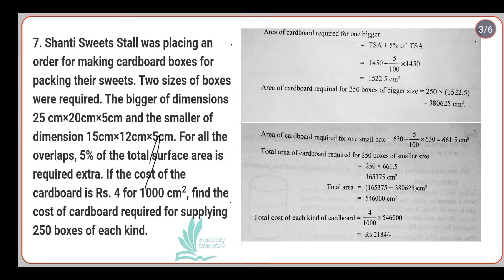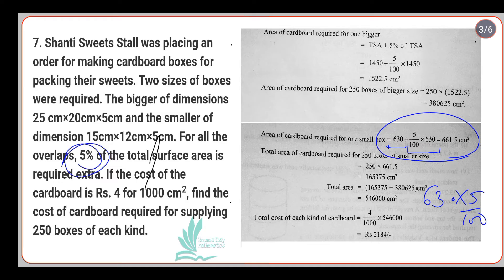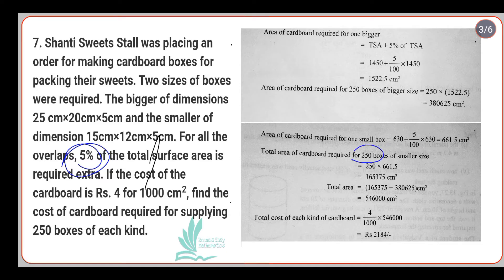We need to do the same for the smaller box as well, since five percent extra is required there too. Our total surface area for the smaller box was 630 cm², calculated on the last page. Taking five percent of 630 and adding it to 630, we get 661.5 cm². Now multiply one small box's area by 250 because 250 of each kind are required, giving 165375 cm².